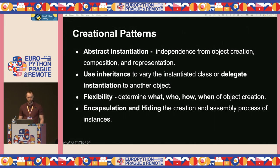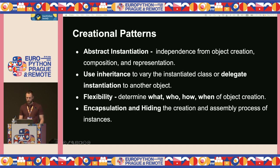Let's dive into creational patterns. They abstract the instantiation process, making systems independent of object creation, composition, and representation. They use inheritance to vary the instantiated class or delegate instantiation to another object. These patterns offer flexibility in determining what gets created, who creates it, how it's created, and when. They also encapsulate knowledge of the concrete classes used and hide the creation and assembly process.